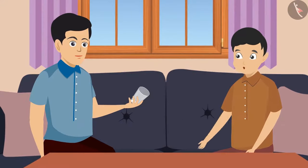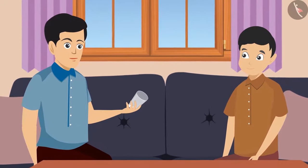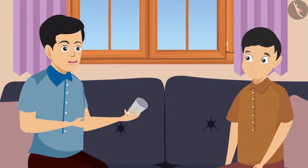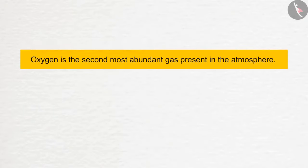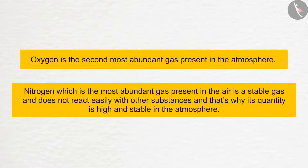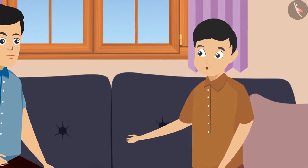This is because the glass still had some amount of air in it, but all the oxygen in it had been consumed and its space had been taken by the carbon dioxide exhaled by you. This is the reason that we like to breathe in a place with a clear and clean environment, as the availability of oxygen is greater there. Oxygen is the second most abundant gas in the atmosphere. Nitrogen, the most abundant gas, is stable and does not react easily with other substances, which is why its quantity remains high and stable. We also suffocate where air pollution is high or where something burns, because many toxic substances enter our body with the air.